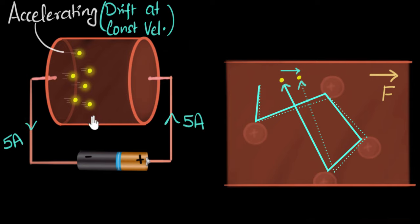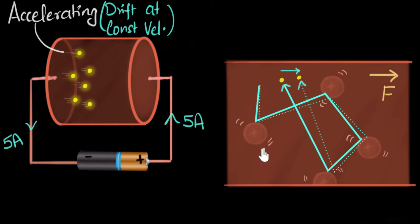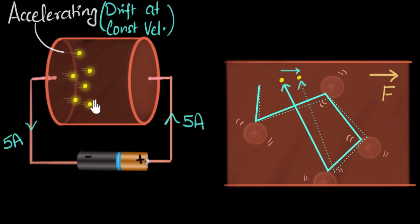With this, you can also understand where the energy from the battery goes. When the battery accelerates the electrons, it gives energy to them. But every time an electron collides with the metallic ions, it transfers its energy to those ions. The ions then start vibrating, and we macroscopically experience this as heat — which is why we see the conductor heating up. When you pass current through something, it heats up. So to summarize: electrons have a very high thermal velocity — traveling at hundreds of kilometers per second — but that doesn't get them anywhere. In the presence of a field or battery, they start drifting at a constant velocity called drift velocity, which is incredibly low — on the order of millimeters per second.